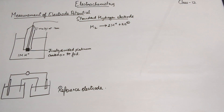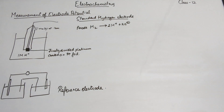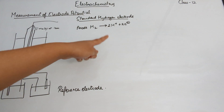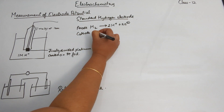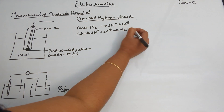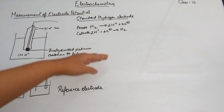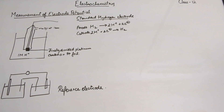When the SHE acts as an anode it undergoes oxidation: H₂ gives rise to 2H⁺ plus two electrons. When it acts as a cathode, the reverse occurs: 2H⁺ plus two electrons give rise to H₂. So the concentration of both the reduced and oxidized hydrogen stays constant — the hydrogen ion concentration is always one molar and the hydrogen gas pressure is always one bar.